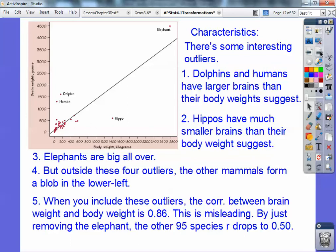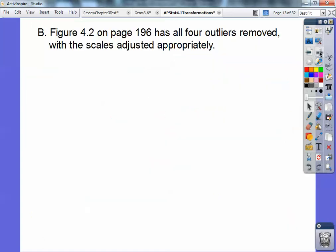When you include these outliers, the correlation of the brain weight and body weight when you do a least square regression line is 0.86, pretty darn strong. But it's misleading. Just by removing the elephant and using the other 95 species, the correlation drops to 0.5. Can you see if I took out that elephant, it would dip that line down quite a bit. The elephant's pulling that line up a lot right there.